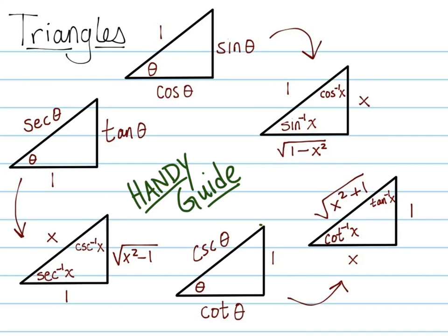Here's a handy chart showing all of the triangles and all of the side labelings. Here is the one with arc sine and arc cosine as angles and the corresponding sides. And for future reference, we also have arc tangent, arc secant, and so on.